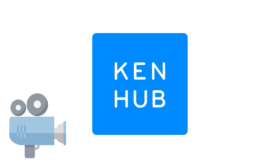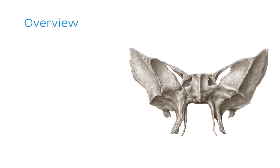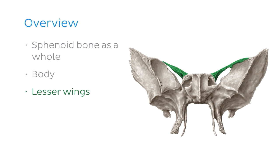Hey everyone, it's Nicole from Kenhub and welcome to our tutorial on the sphenoid bone. In this video, we're going to be looking at the sphenoid bone and all of its bony features. To get a good understanding of the sphenoid bone, we'll first look at the sphenoid bone as a whole. Then we'll look at the four main parts of the sphenoid bone, which includes the body, the lesser wings, the greater wings, and the pterygoid processes.